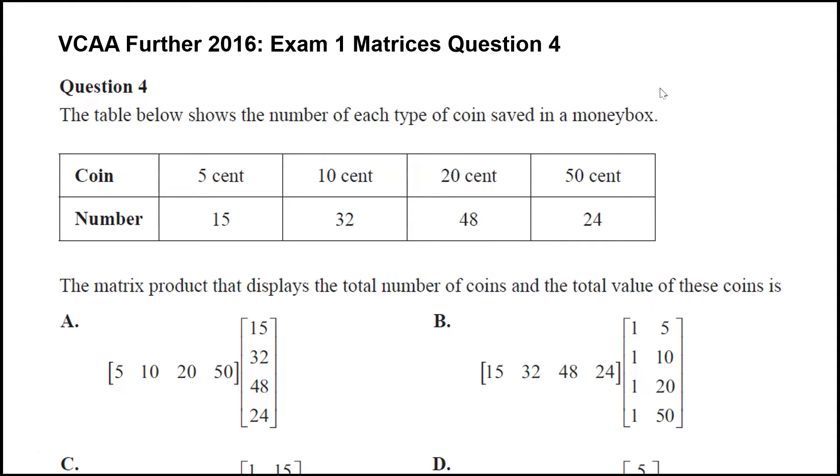It's a question about matrix multiplication and interpreting the meaning of a matrix multiplication. We're given some coins, 5, 10, 20 cents and 50 cents, and the number of each of those coins in a money box. We're asked to find a matrix product that displays the total number of coins and the total value of these coins.